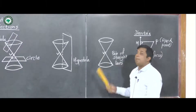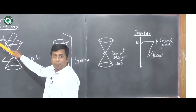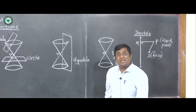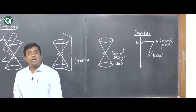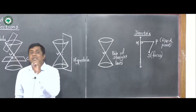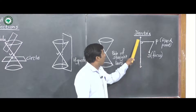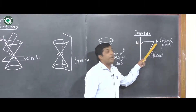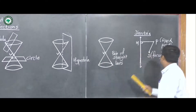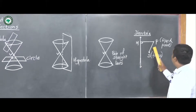So we have defined circle, parabola, hyperbola, and pair of straight lines as conic sections. Now to define conic sections analytically, we consider a fixed line, a fixed point S called the focus, and a moving point P.